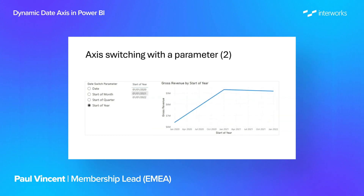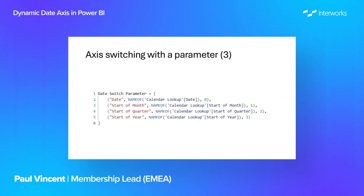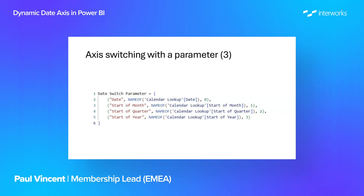What's happening here is we're taking a table with multiple columns and switching out the column we're using to build our line chart — this is effectively a column switching method. The parameter has actually added a table to our data model. We can open it up and see the DAX expression being used. The switching parameter uses a function called NAMEOF, which brings back the column name you've put in the arguments. This approach is simple to build and intuitive for users — a straightforward switch to change the granularity of your date axis.